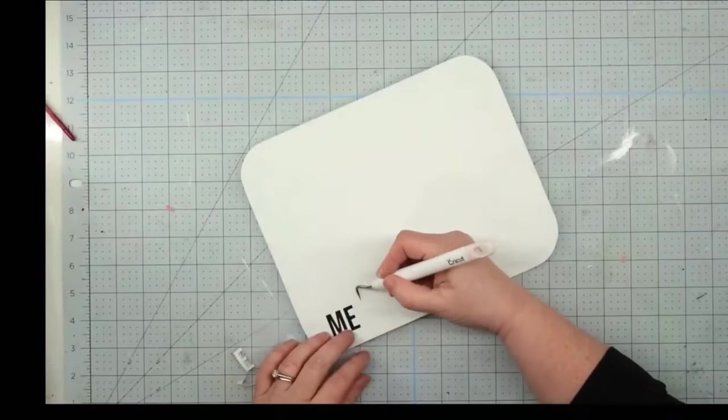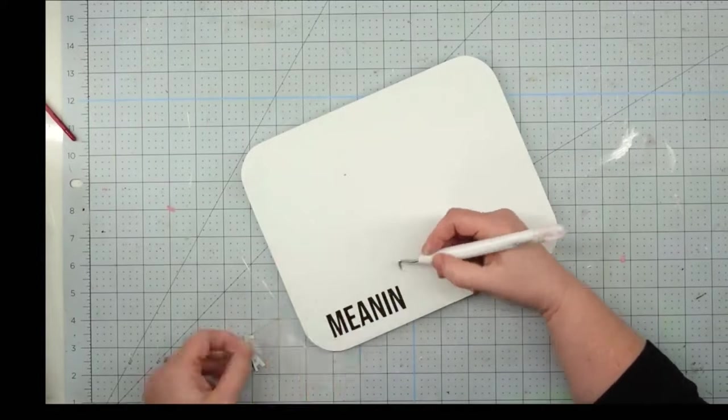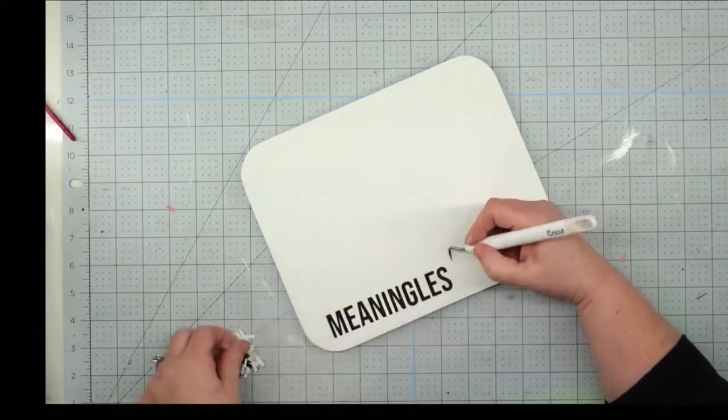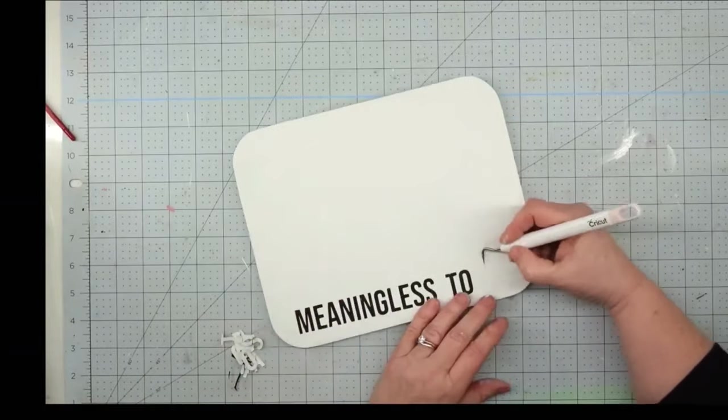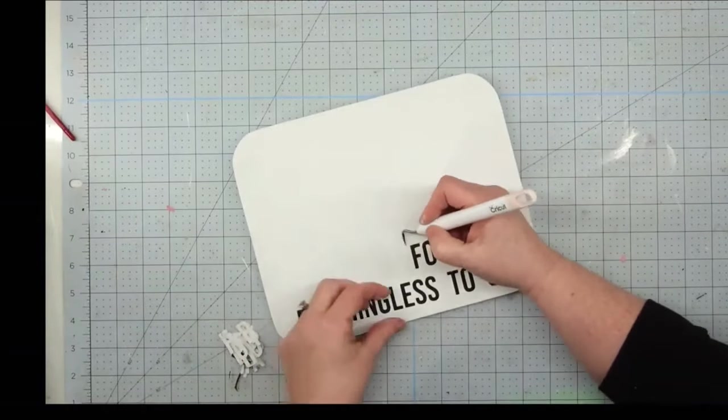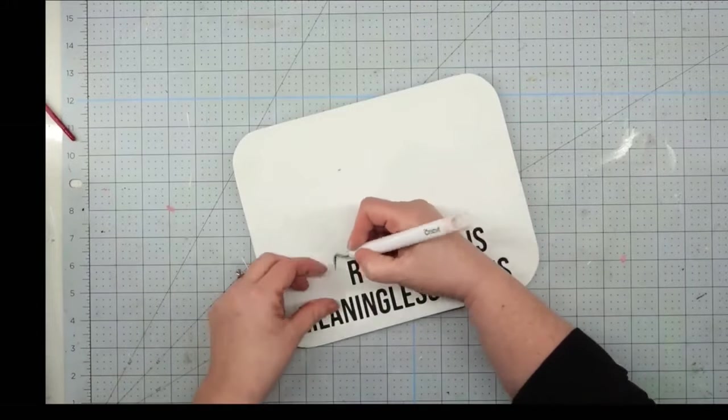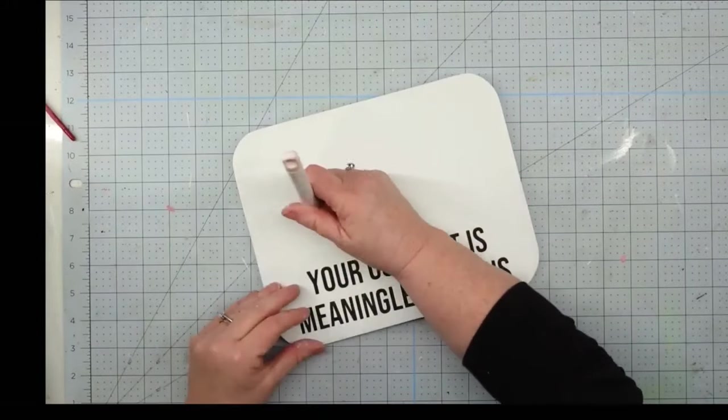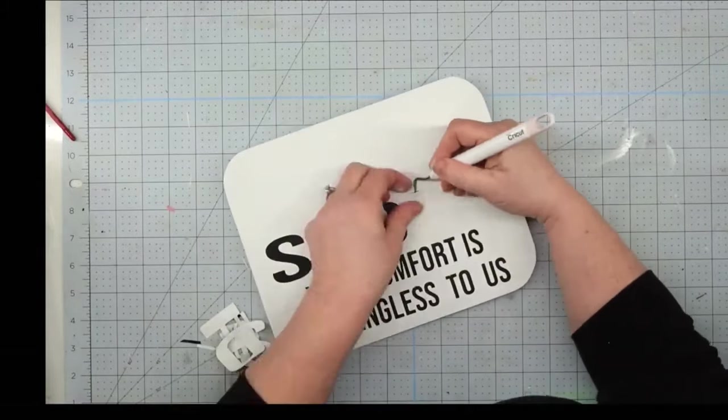Now that our paint is dry, we get to remove our letters. Y'all, I love this part. It always comes out so nice and crisp. This is how I did my signs that I sold at craft fairs. So many people would comment on it and how cool it is. A lot of people would even ask me how I did it.